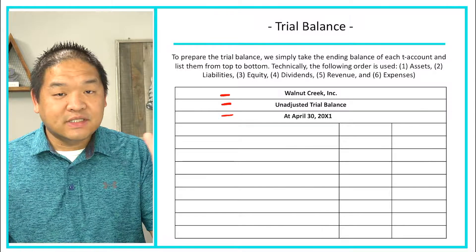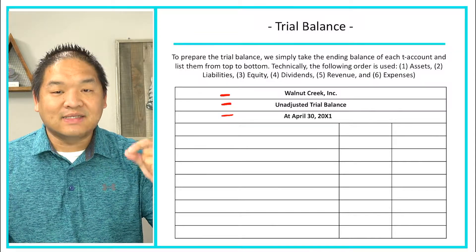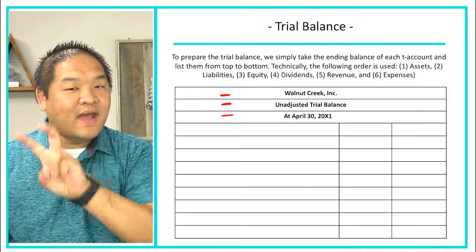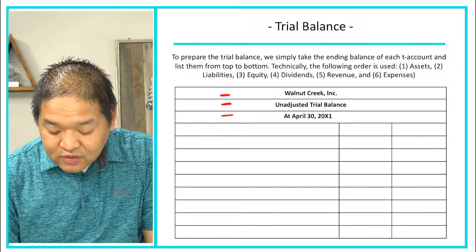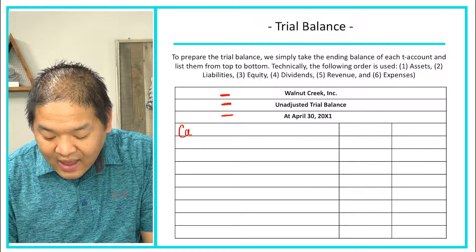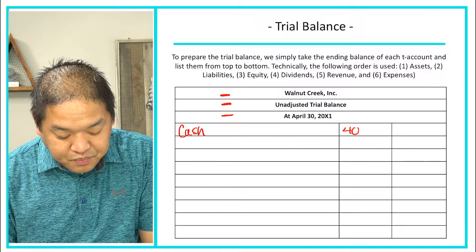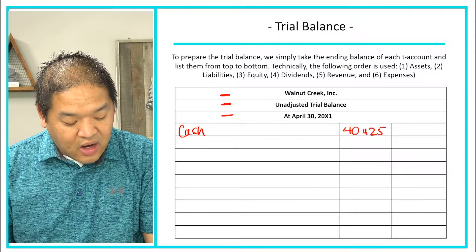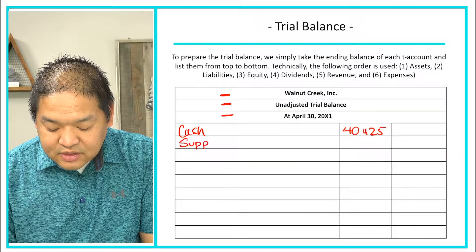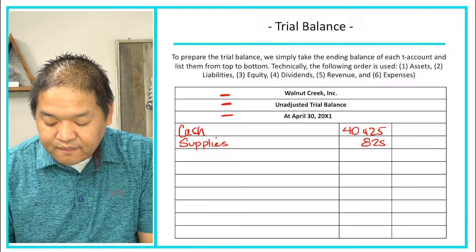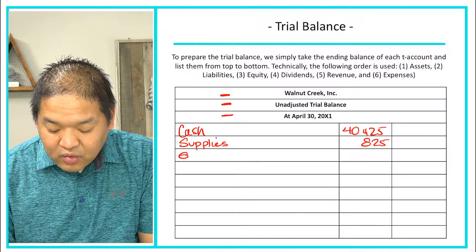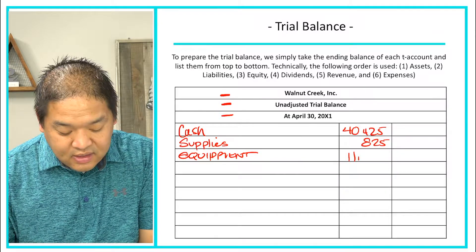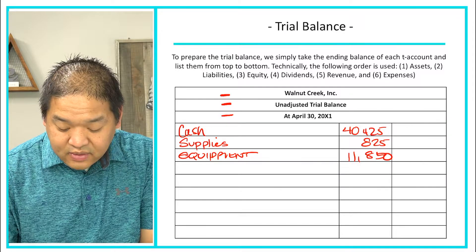We start with assets, then liabilities, owner's equity, dividends, revenues, and expenses — listing each with their ending balance. The first and most liquid asset is cash, which is a debit of $40,425, so it goes on the left column. Next most liquid is supplies at $825, then equipment at $11,850.